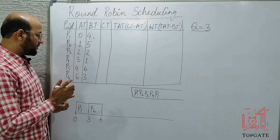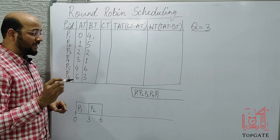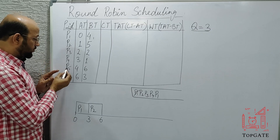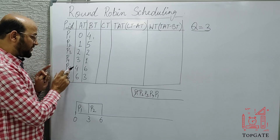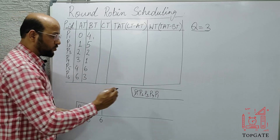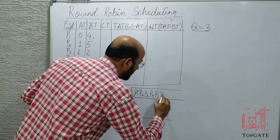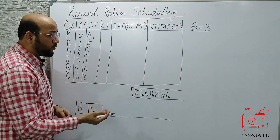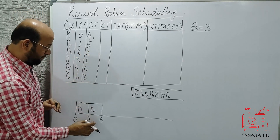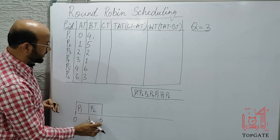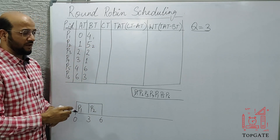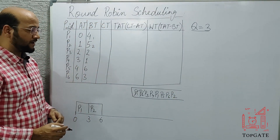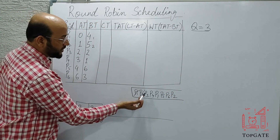We are at time six. First step: I'll check which processes have arrived up to time six. We already have P4, and now P5 also arrived at four and P6 arrived at six. So I write P5 and P6 here. Second step: P2 has completed three units but two units are still left, so I cut it from the front and write it at the end of the ready queue.